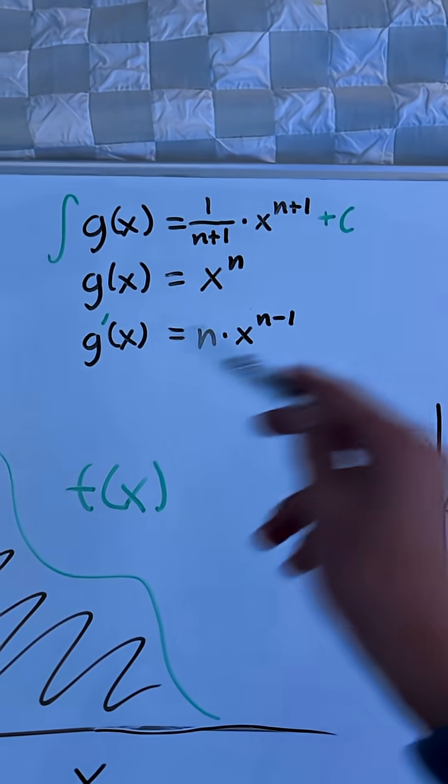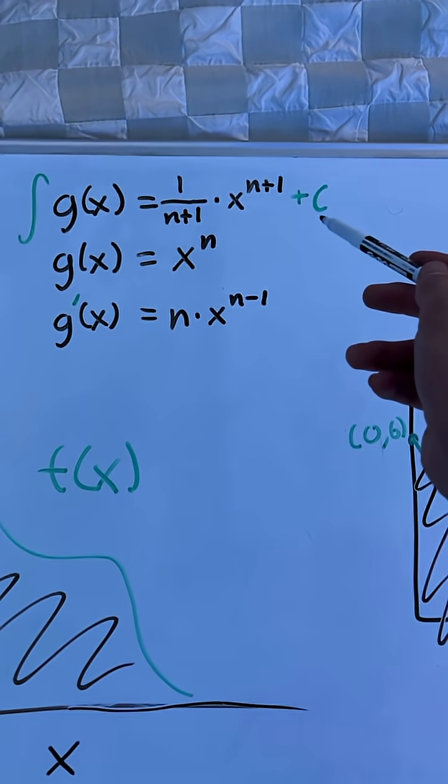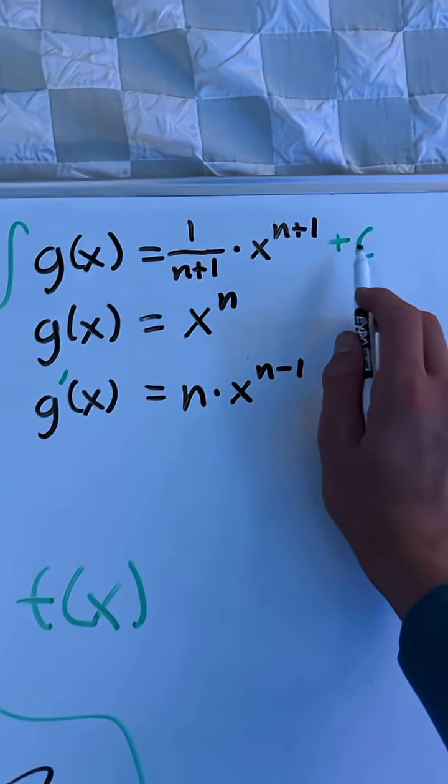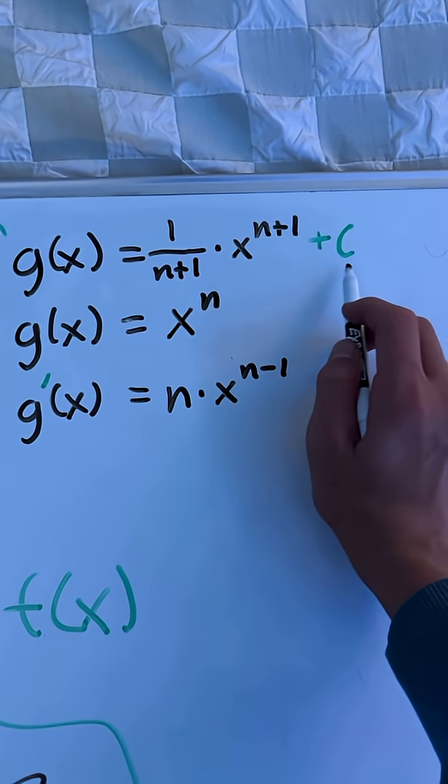So taking the integral is just the inverse process of taking the derivative, but you also have to add a plus C. Meaning you add one to the exponent, then divide it by n plus one. The plus C just represents any constant, because if you take the derivative of a constant, you get zero.